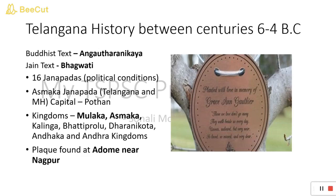During the time of Asmaka, there was another great king called Parashrama. Contemporary means from the same era — Parashrama was a contemporary of Asmaka. Parashrama attacked Asmaka's kingdom, and at that time Asmaka's son, whose name was Molaka, fled away to a new place and established his own kingdom named the Molaka kingdom after his name.